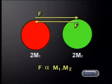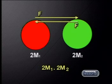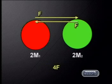So, if you double the mass of one object, you double the gravitational force exerted on these two particles. And if both of their masses are doubled, the gravitational force increases fourfold.